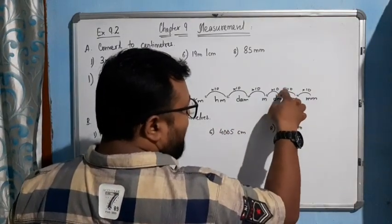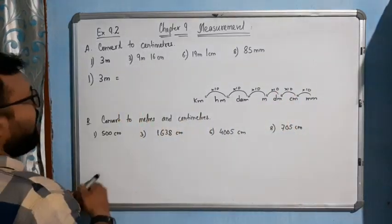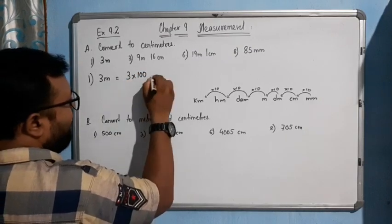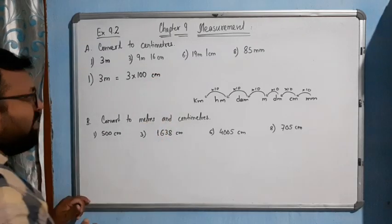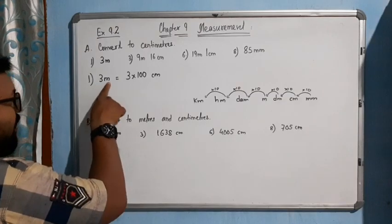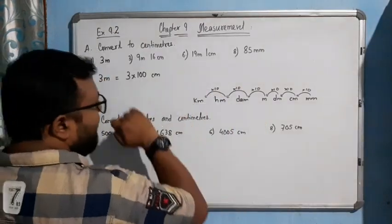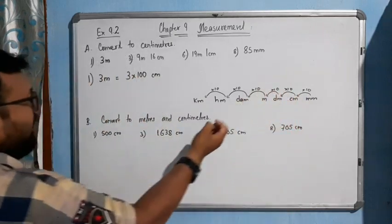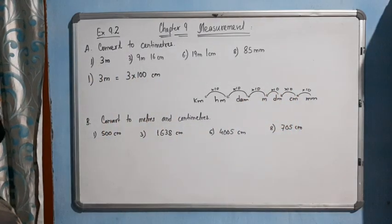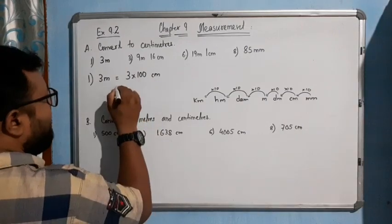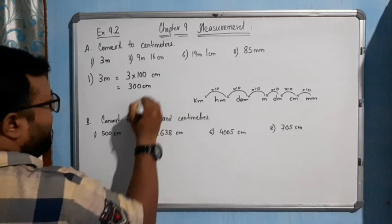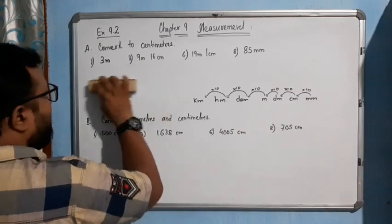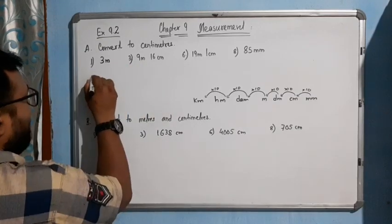For question 1: 3 meters equal to how many centimeters? Remember that 100 centimeters gives you 1 meter. So 3 meters into 100 gives you 300 centimeters. Is that clear? Very simple — 3 meters converts to 300 centimeters.